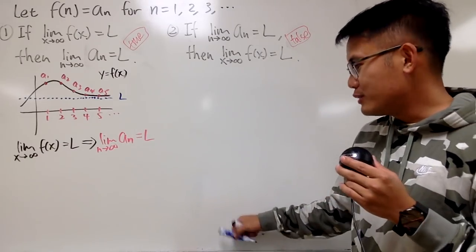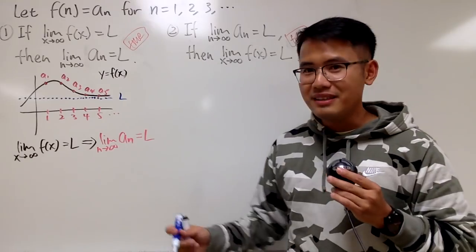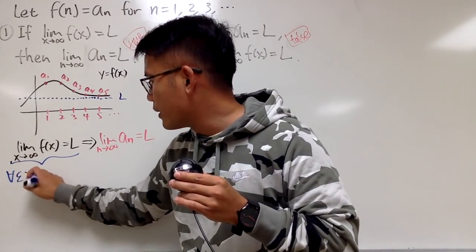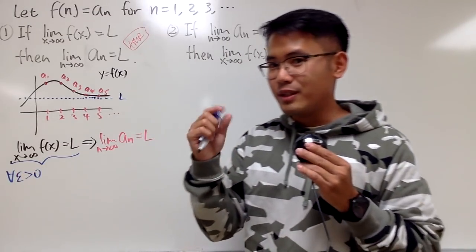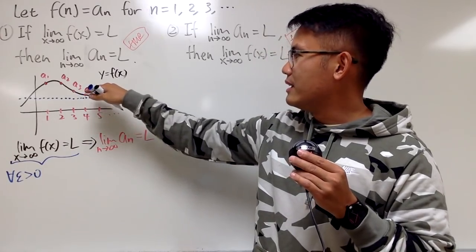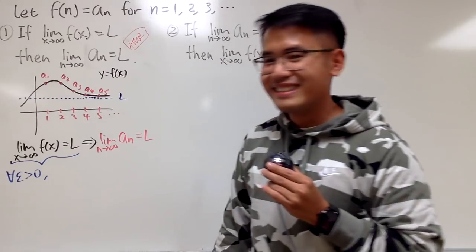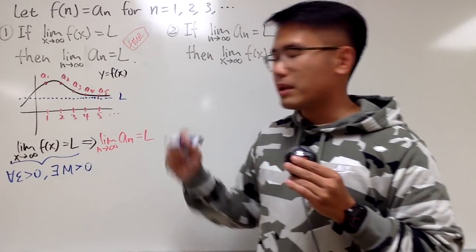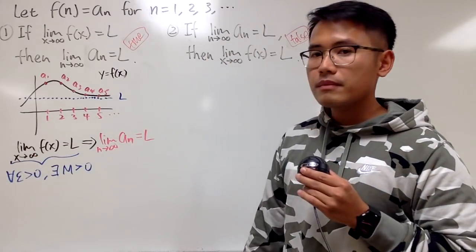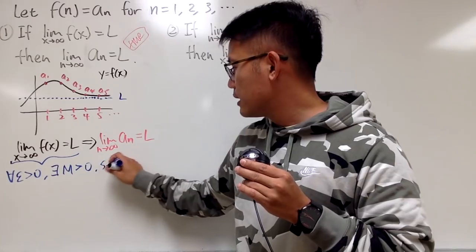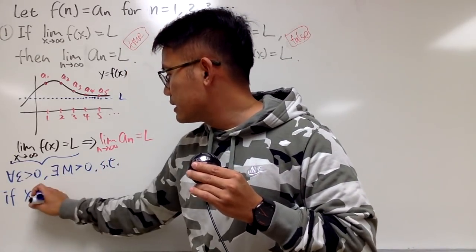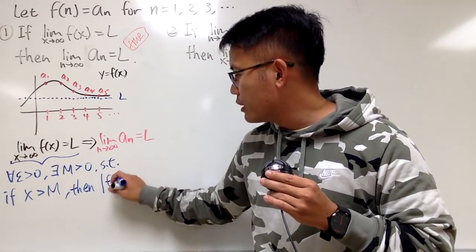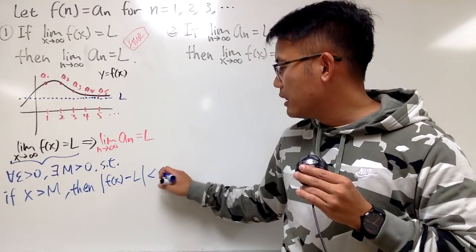Just to show you the pure math side of this, let me write down the definition. Precisely speaking, the limit of f(x) as x → ∞ equals L means: for all ε > 0, there exists some big number M such that if x is past that point M, then the distance between the value of the function and the limit L is less than ε.